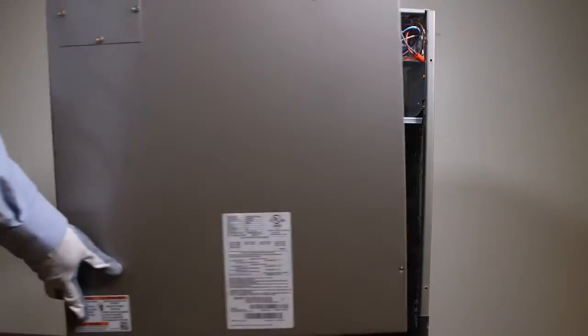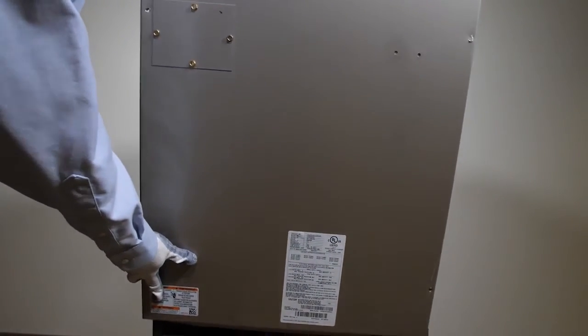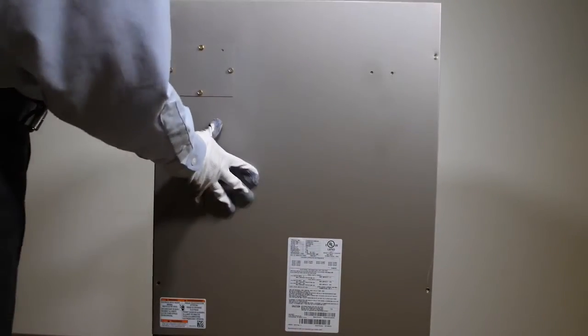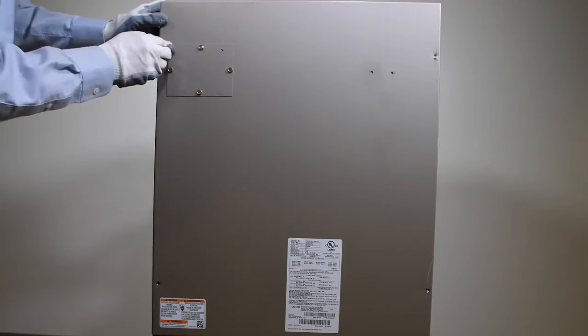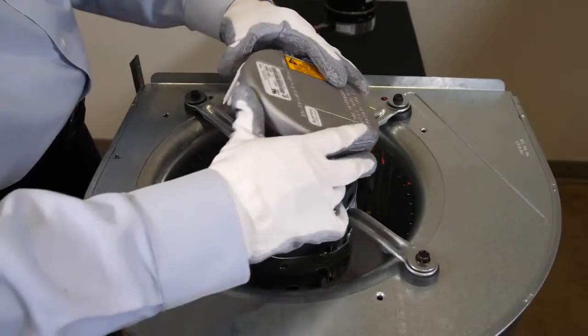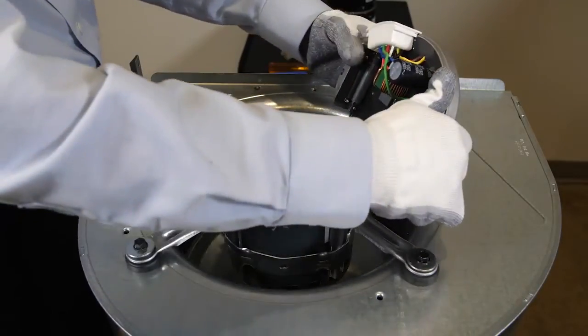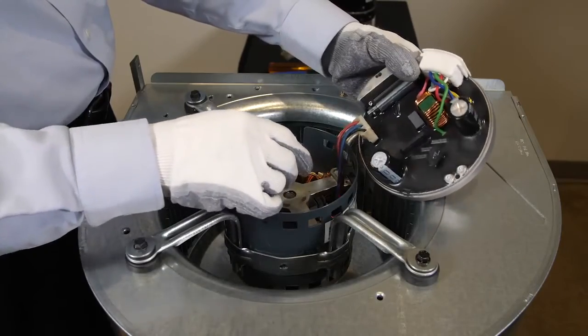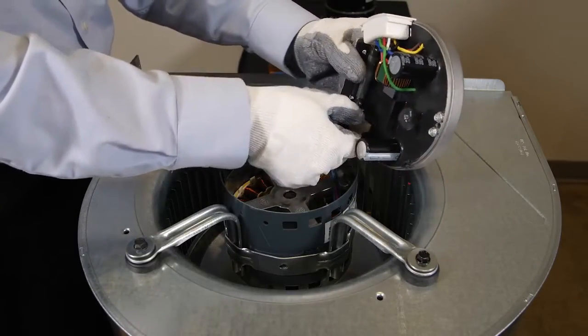Replace the access panel. Reconnect line voltage to the unit and verify that the blower is operating properly. In summary, when troubleshooting fan motors, don't always assume that it's necessary to replace the entire motor. The problem may simply be the control module, and switching out the module is quick and easy.